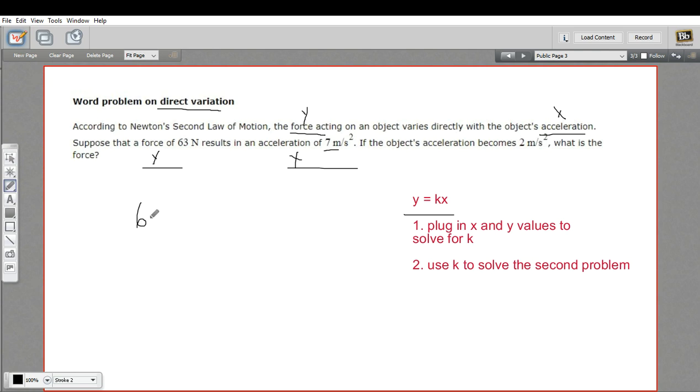So instead of y, I put the force, which is 63 newtons. And then we have k times, and instead of x, I put the acceleration, which is seven. Now I want to solve for k. So I'll divide both sides by seven. And 63 divided by seven is nine.